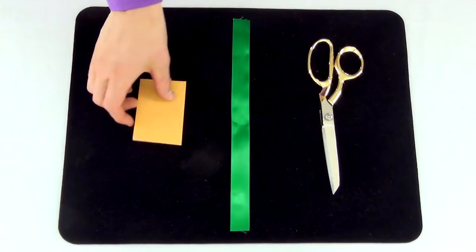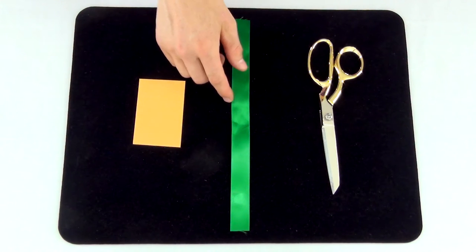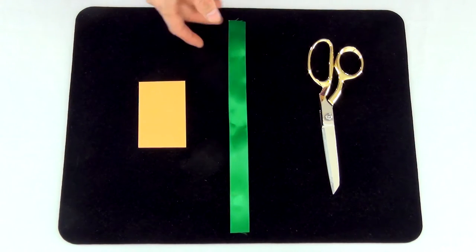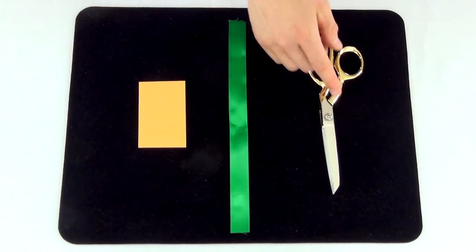For this trick you'll need a coin envelope. You can find these in office supply stores. You'll also need a 12 inch length of 3 quarter inch ribbon, which you can find in any art supply store. And finally, you'll need a pair of scissors.